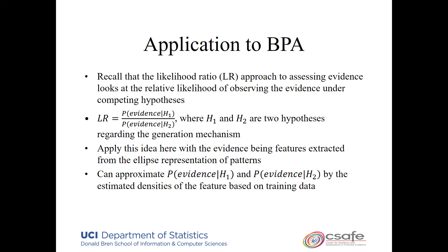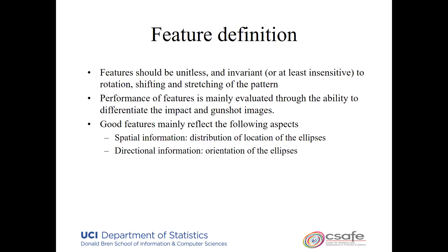It's challenging to define the probability of seeing the entire image, so we summarize it by some features and use the probability of those features — sometimes known as a score-based likelihood ratio. We have desiderata for the features: they should be unitless, not dependent on scale, and invariant to rotation, shifting, and stretching. We will show several kinds of features derived from the images, taking advantage of spatial information — where are the ellipses — and directional information — how are the ellipses oriented — thinking these are likely to distinguish between different mechanisms.